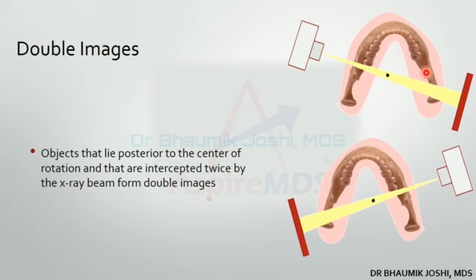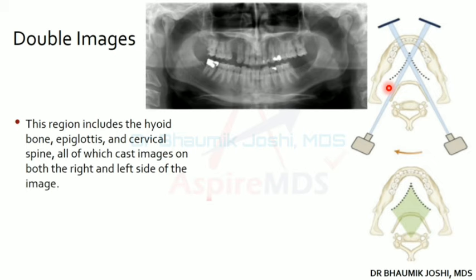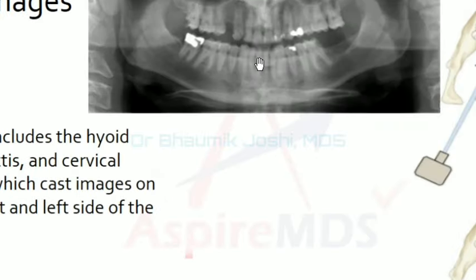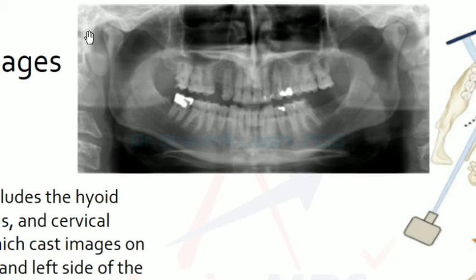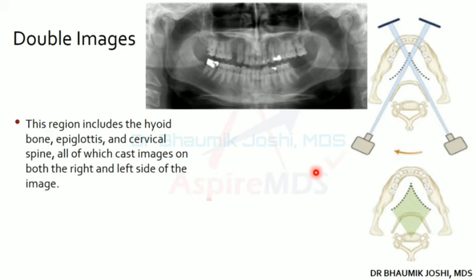Double images occur when a structure appears at two spots on the radiograph. All objects that lie posterior to the center of rotation — that is, behind the arc of rotation — form double images. Structures such as the hyoid bone and vertebrae form double images. In the radiograph, you can see the double image of the spine and the hyoid bone. The pharyngeal airway and epiglottis also form double images.